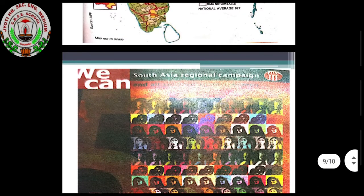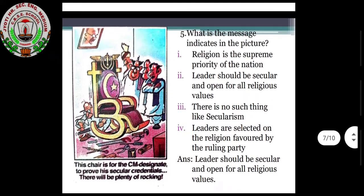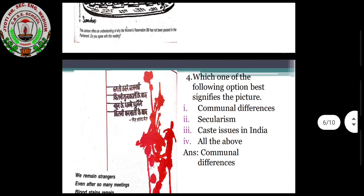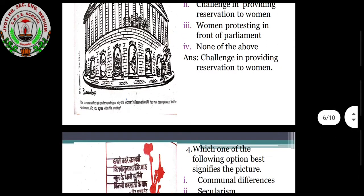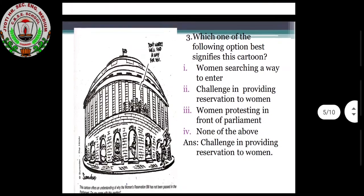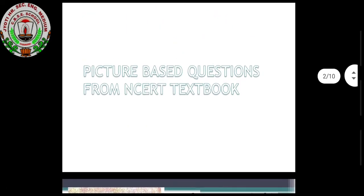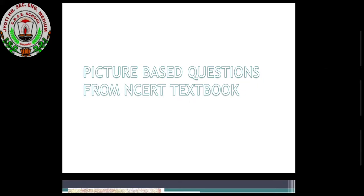There may be some more pictures you have to go through as well. Two marks from each chapter will be based on picture questions. So you have seen this chapter — these are picture-based questions from the NCERT textbook, and it is a small section that may carry two or three marks. That's all for today's video. Thank you.